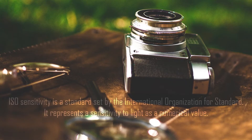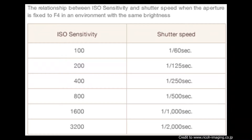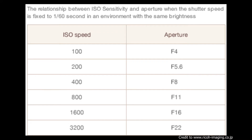Now on to the ISO. The ISO is the sensitivity of the sensor, or how much light it can capture. By cranking it up you could use a faster shutter speed or a more closed aperture.